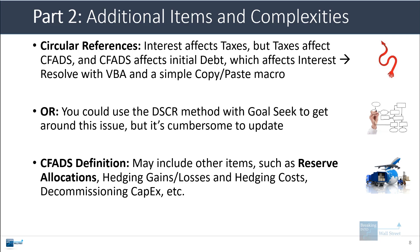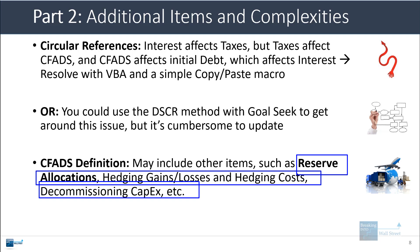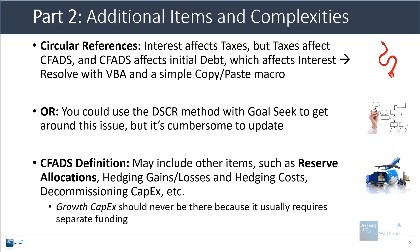With the definition of cash flow available for debt service, some other items could go into it — for example, reserve allocations. For natural resource deals, you could see items like hedging gains and losses and hedging costs. You could see decommissioning CapEx for certain types of assets that require extra spending when they go out of service. One important point though is that growth CapEx should never be there. If you buy an airport and expand it by building a new terminal, that CapEx should not be part of this because there will usually be a separate funding source — separate debt, equity, or combined — to fund that major expansion.